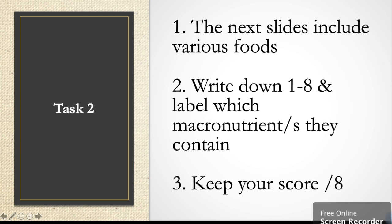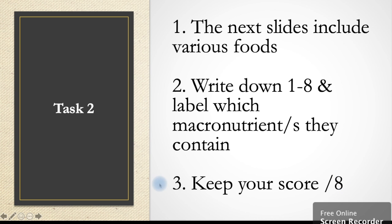It's time for task 2. This is a little bit of a quiz to see how well you've understood the content we've gone through so far. Over the next couple of slides there will be different images of foods. Write down numbers 1 to 8 on a piece of paper and label which macronutrient is present in each food shown. There are 8 images so keep your score. Good luck.